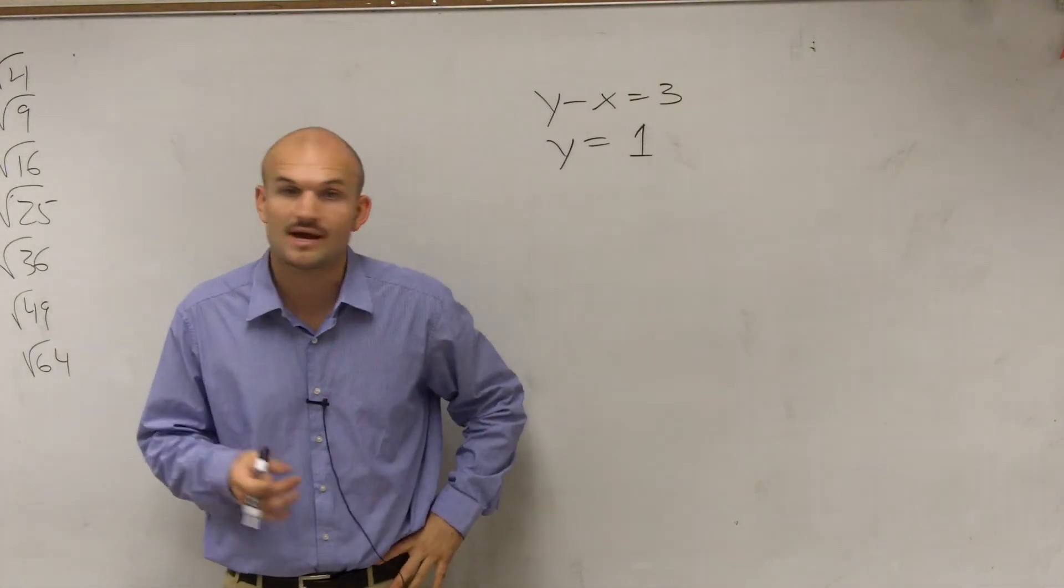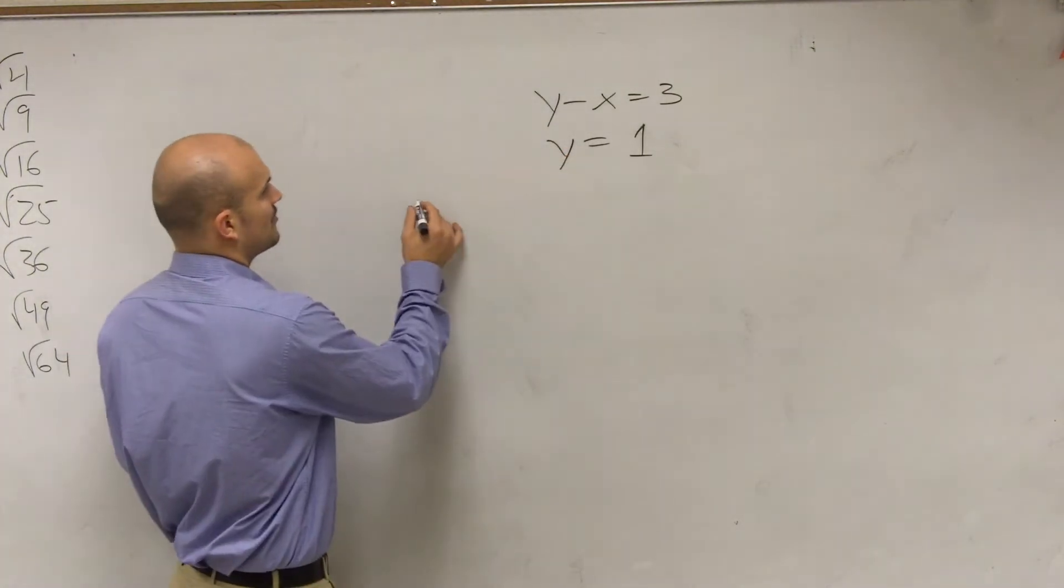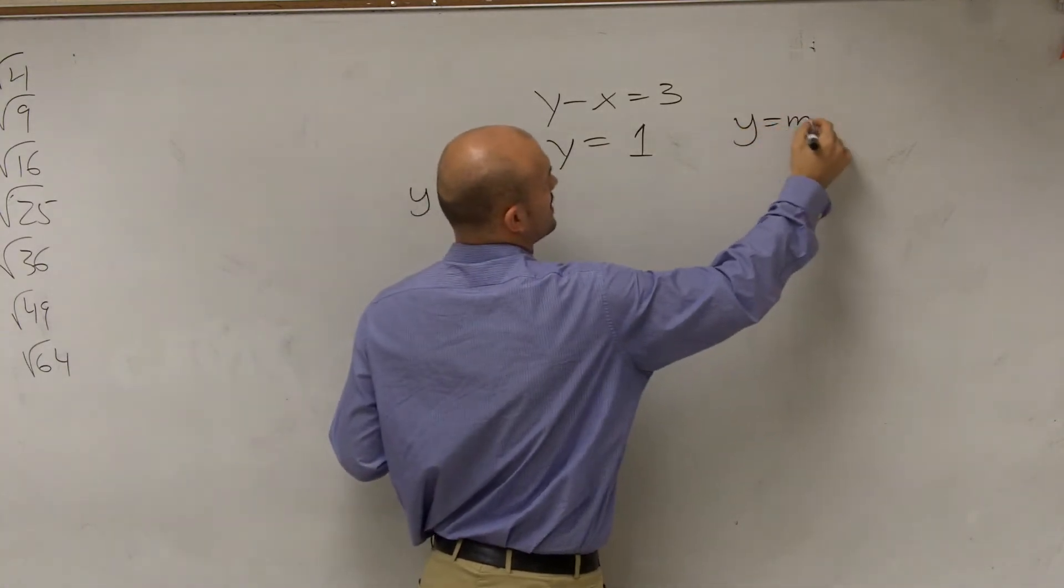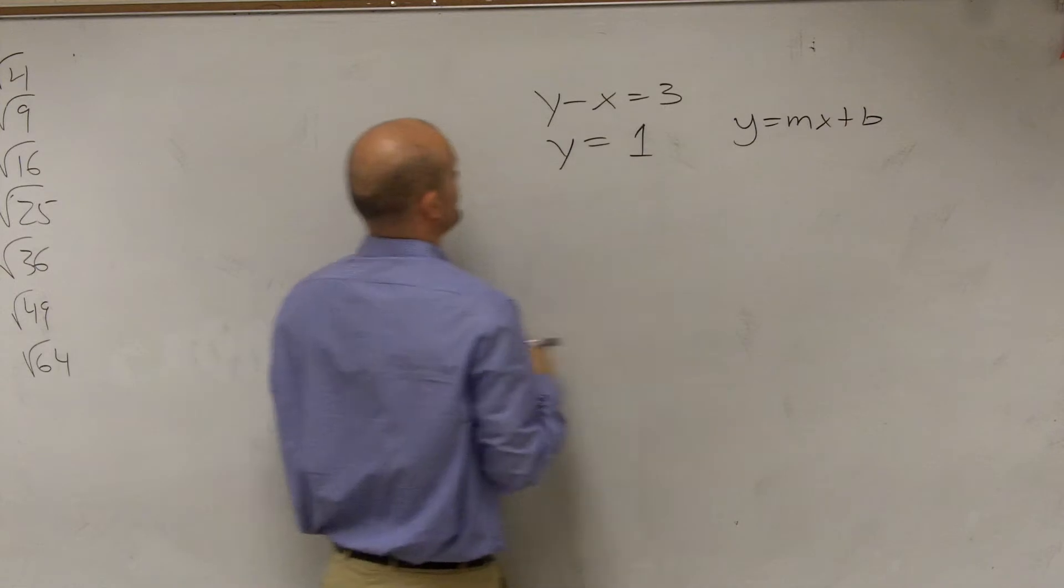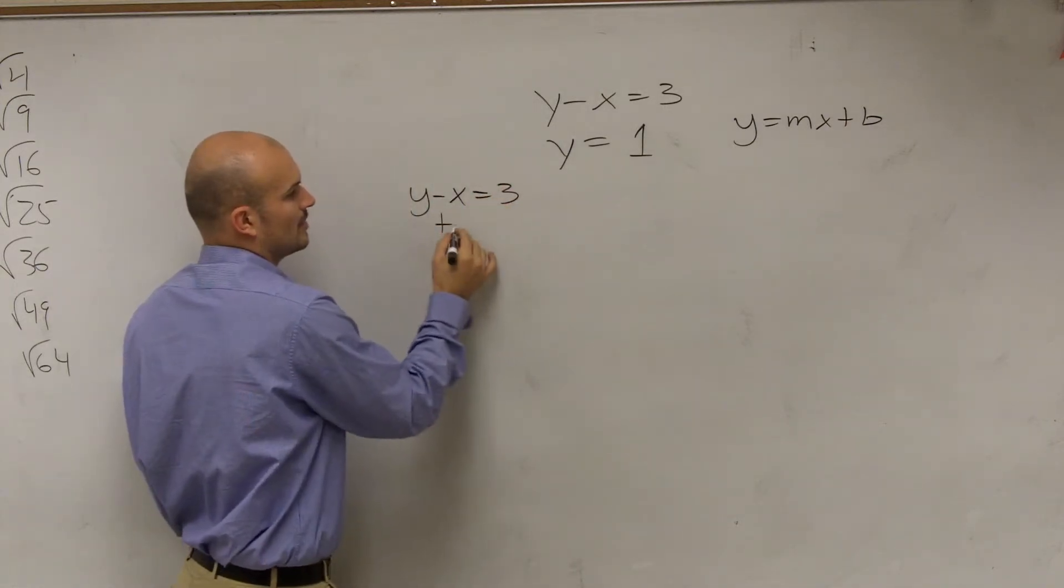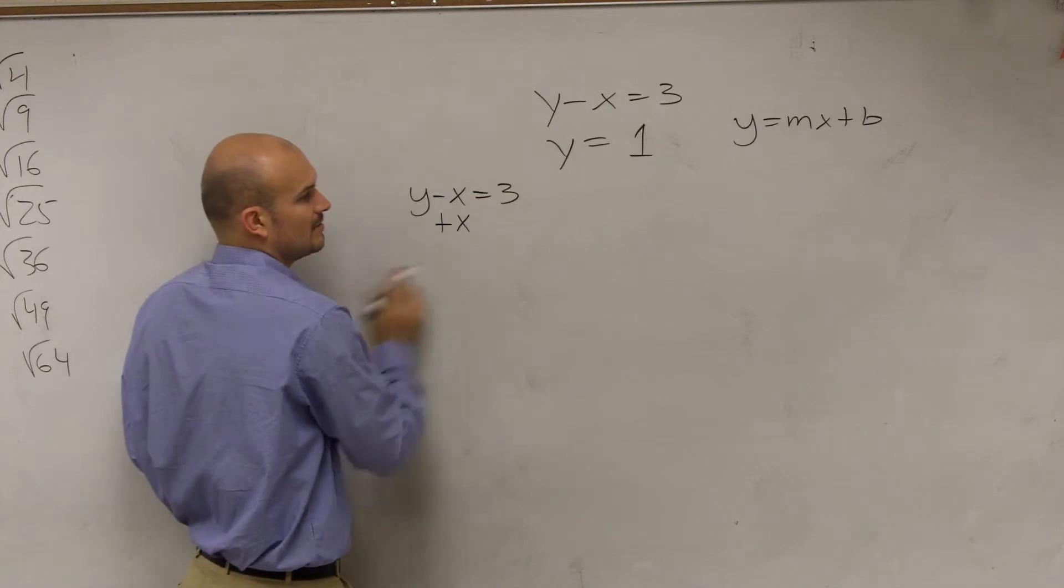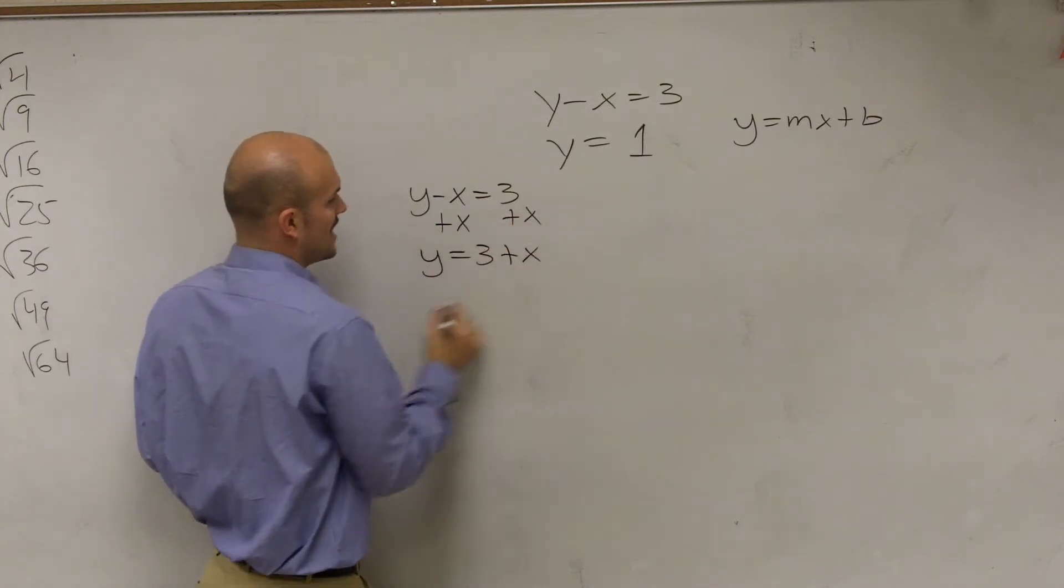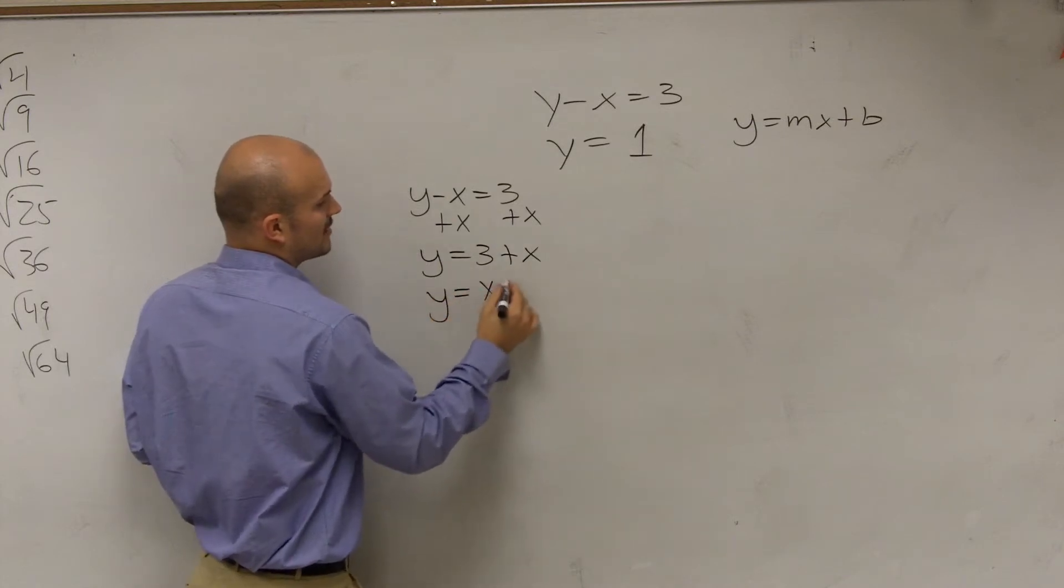So now what I'm going to do is I'm going to graph these two. So again, I've got to put them in their form. I want to put them in the form y equals mx plus b. So I have y minus x equals 3. How do you put that in that form? Or how do you get rid of everything else? You add x to both sides. So you go y equals 3 plus x, and I rewrite that to y equals x plus 3.